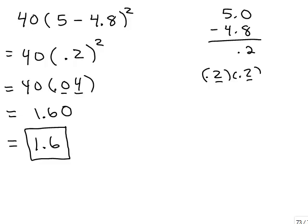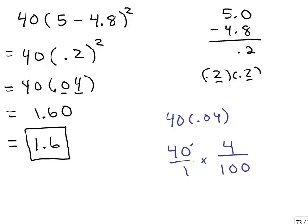For fraction lovers, you could do 40 times 0.04 using fractions as well. 0.04 means 4 hundredths, so you're multiplying times 4 hundredths. If you cancel — divide top and bottom by 10 — you really have 4 times 4 over 10, which gives you 16 tenths. And 16 divided by 10, just move the decimal one place, gives the same answer. I'm not suggesting you should change it to fractions, but if you do and write it back as a decimal, you will end up with the same answer.